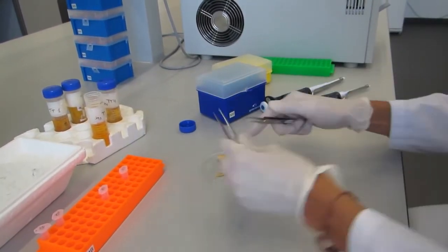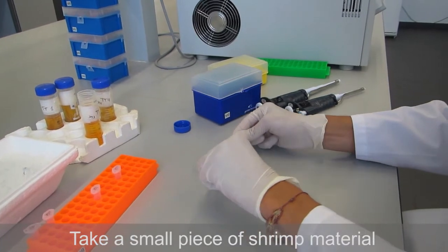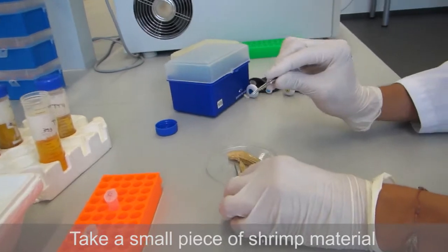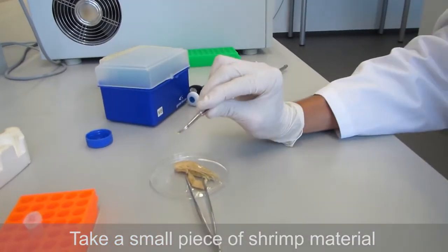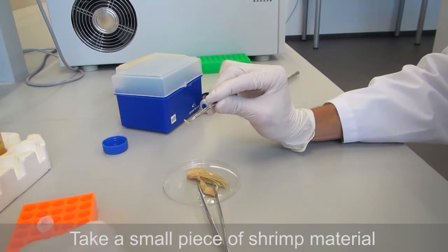For today we will take only a small piece of this leg. It's a small swimming leg, a pleopod of the seabob shrimp. And from this part we will extract the DNA.